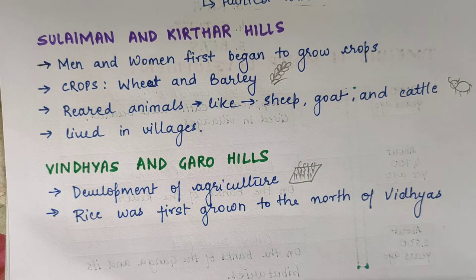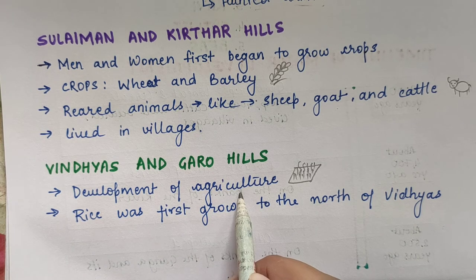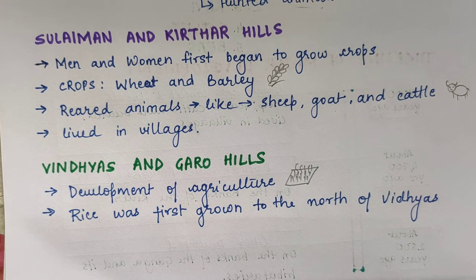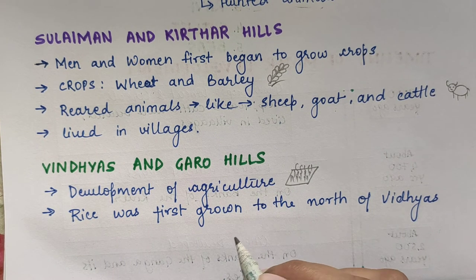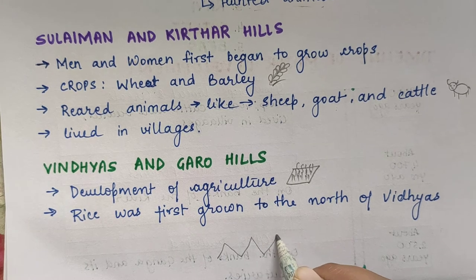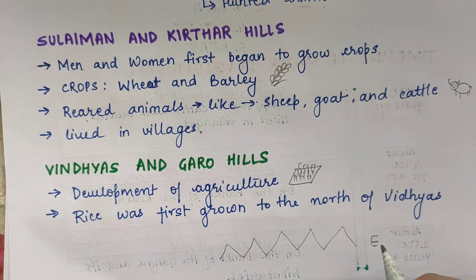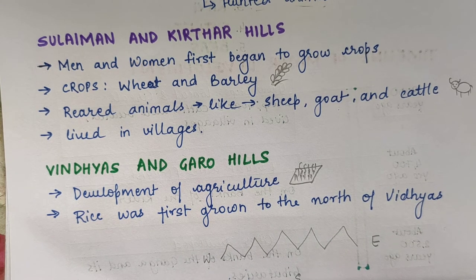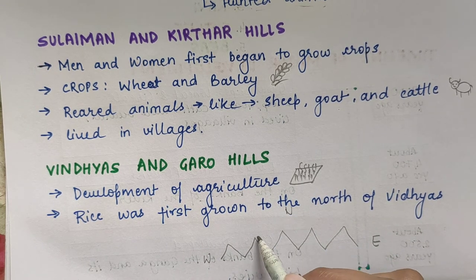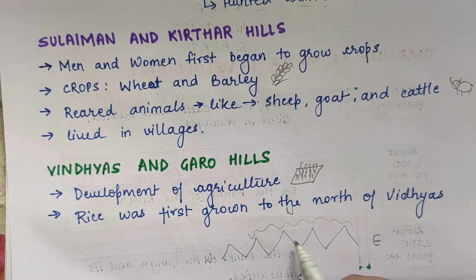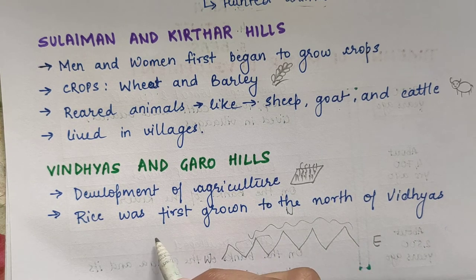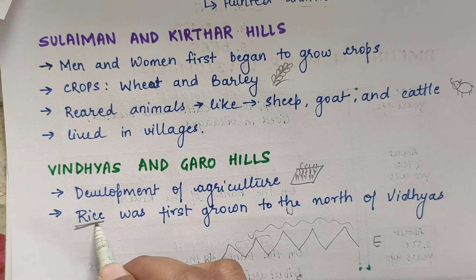Why? Because there were rivers near these hills. So they developed agriculture — they also started doing agriculture here. And do you know, rice was first grown to the north of Vindhya. If this is Vindhya Hills — imagine — here in this northern part, people started growing rice.